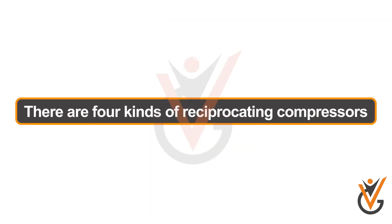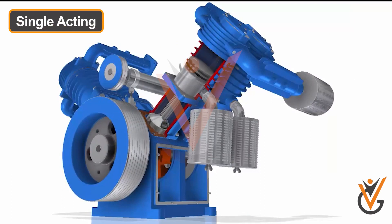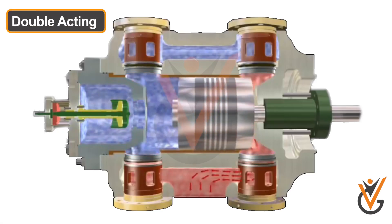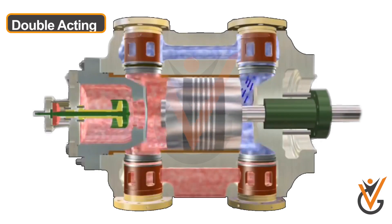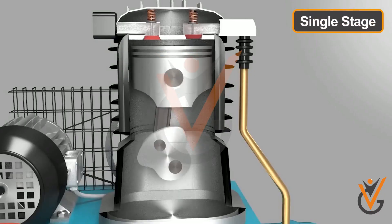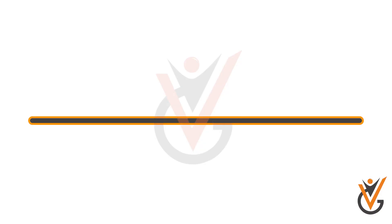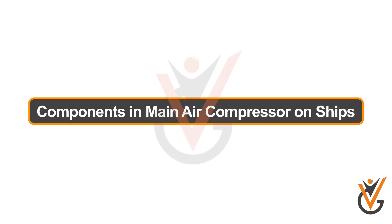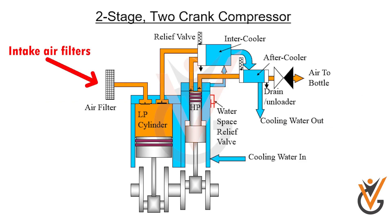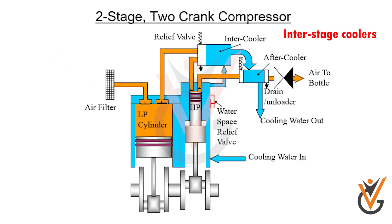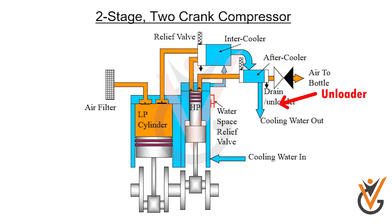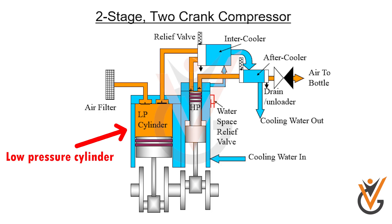There are four kinds of reciprocating compressors: single-acting, double-acting, single-stage, and double-stage reciprocating air compressors. Components in the main air compressor on ships include intake air filters, inter-stage coolers, after coolers, unloader, relief valve, low-pressure cylinder, and high-pressure cylinder.